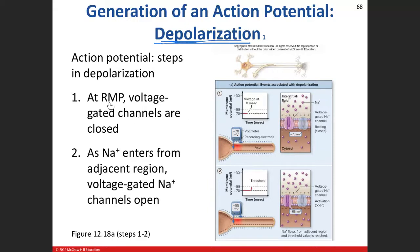Step by step: Step one — resting membrane potential at negative 70. Our leak channels are open, sodium-potassium ion pumps are maintaining negative 70. Our voltage-gated channels are closed. Step two — in the initial segment, our first voltage-gated sodium channel opens. Sodium starts to flood into the axon hillock from the adjacent region. Our resting membrane potential goes from negative 70 to becoming more positive, reaching negative 55, which causes our voltage-gated sodium channels in the conductive segment to open.